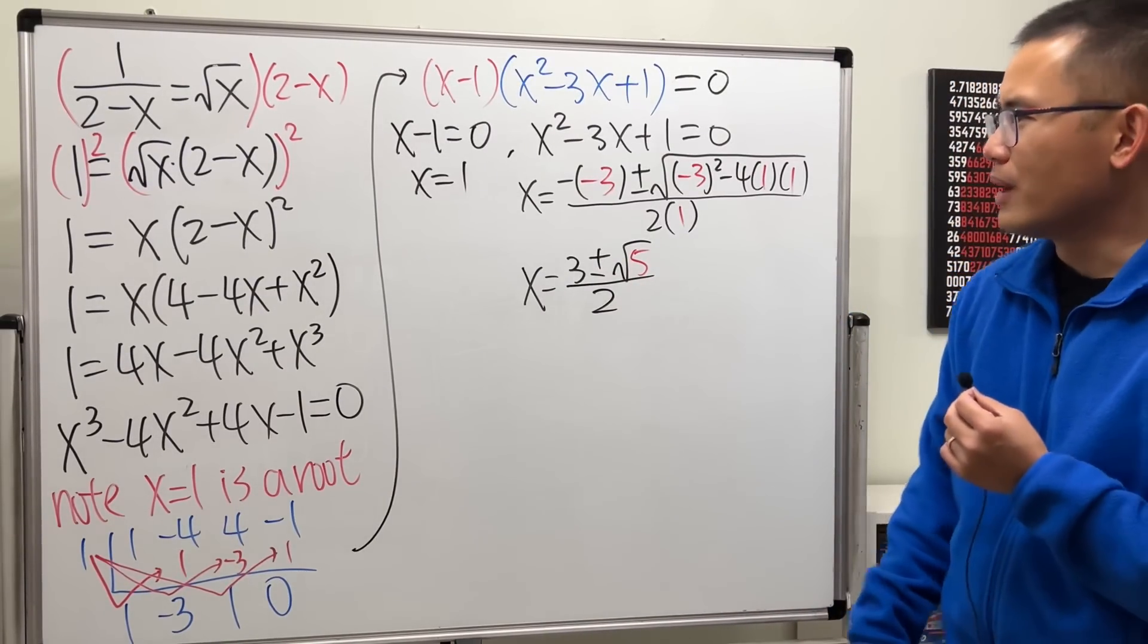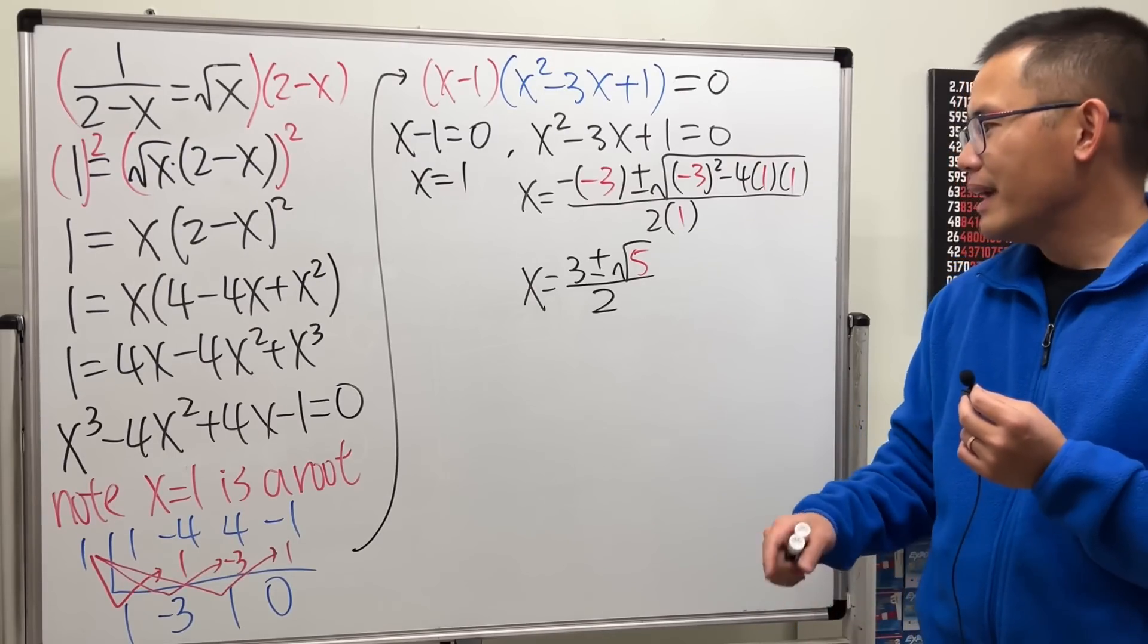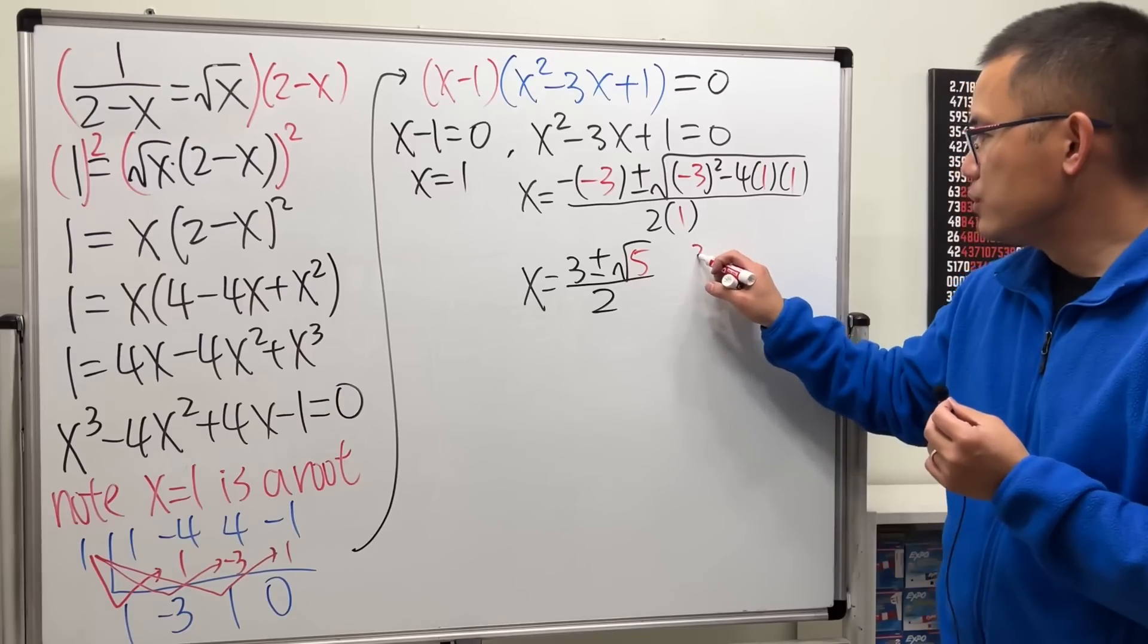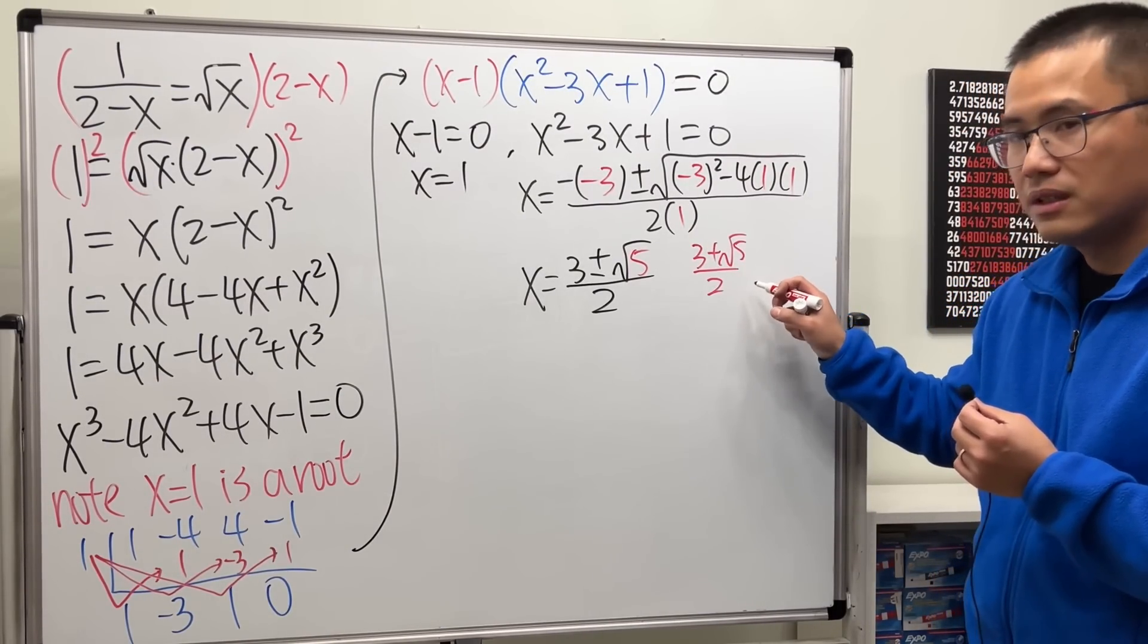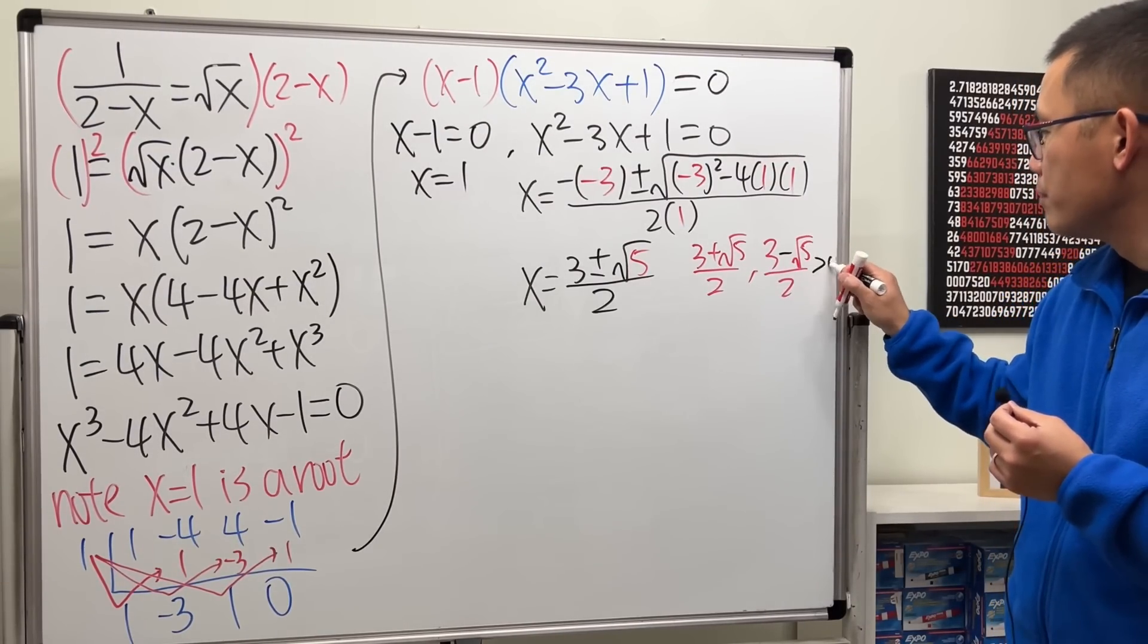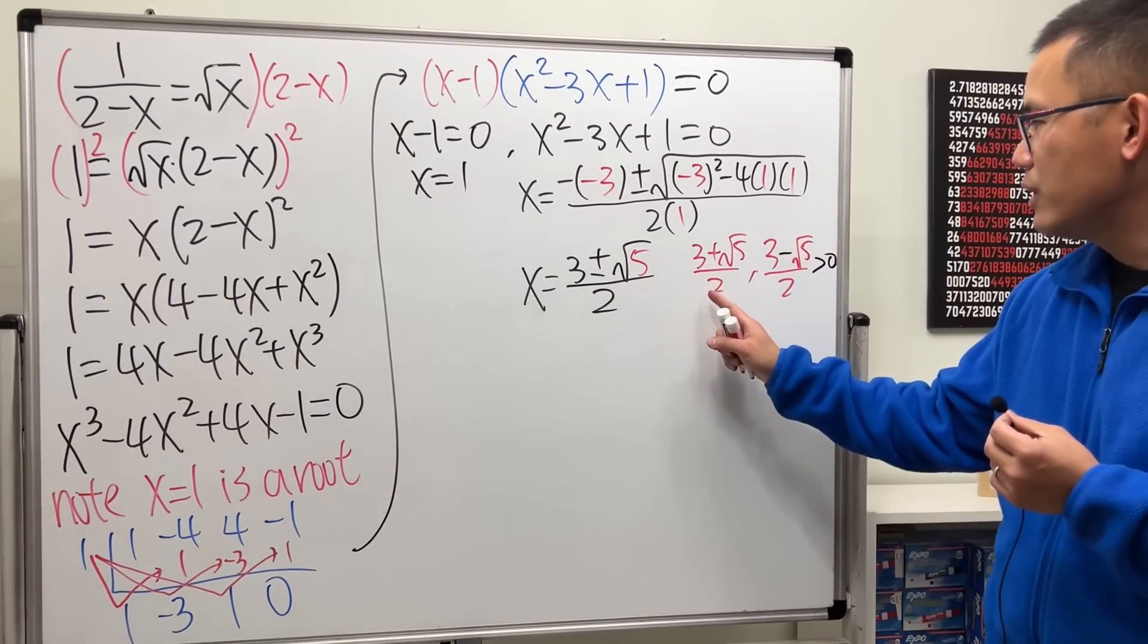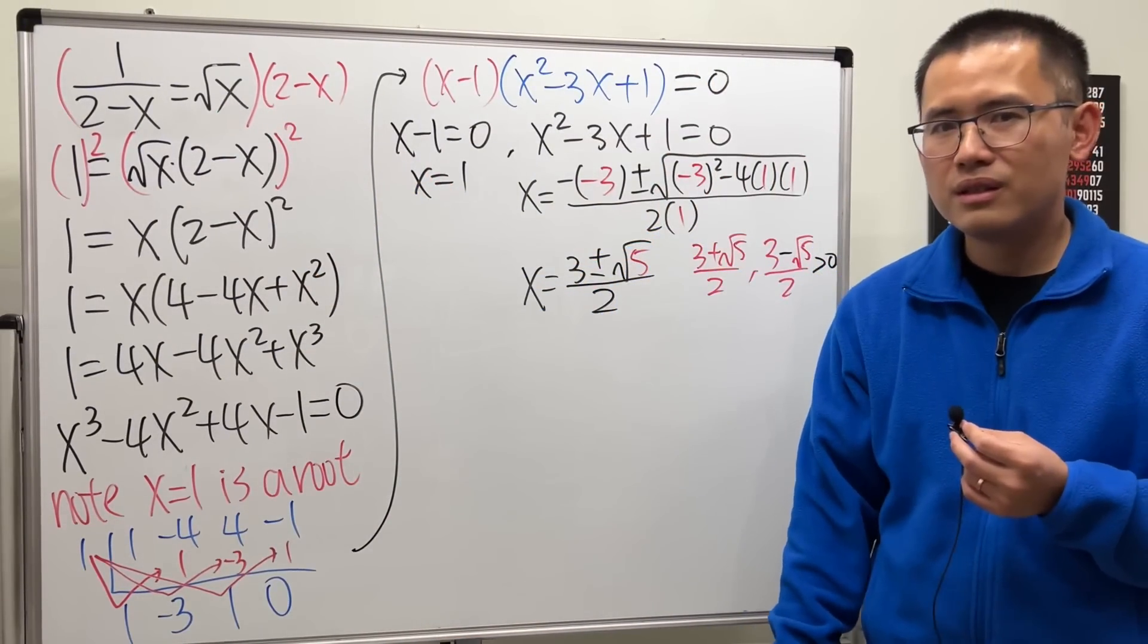So hey, we have one answer, two answers, three answers. And in fact, I will tell you, if you take the positive right here, 3 plus square root of 5 over 2, this right here is positive. But if you take 3 minus square root of 5 over 2, they are both positive. Right? They are both positive. So you can plug in this and that into the square root of x. That works.